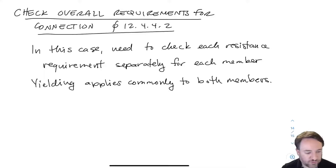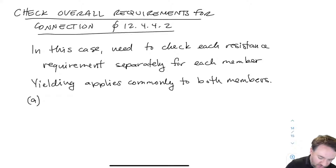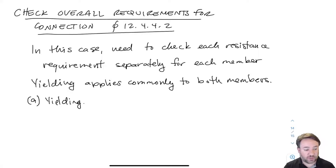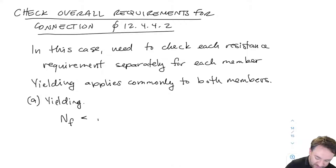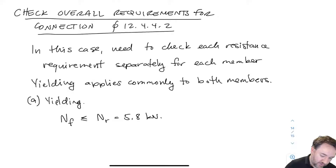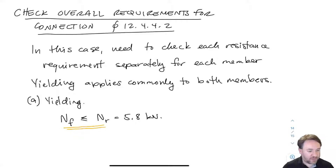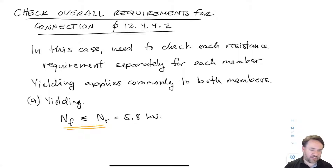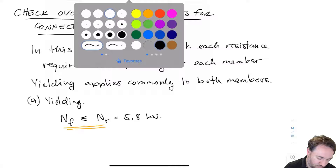Those are the requirements from Clause 12.4.4.2. The first one is the yielding requirement, which applies to the entire connection together — there's not a separate yielding check for the brace side versus the beam side. The yielding requirement is that nf has to be less than or equal to nr for yielding, which we calculated as 5.8 kilonewtons. So this is already one bound on nf — we're not going to get anything better than 5.8 out of this connection, no matter what the other strengths are for the brace or the beam.